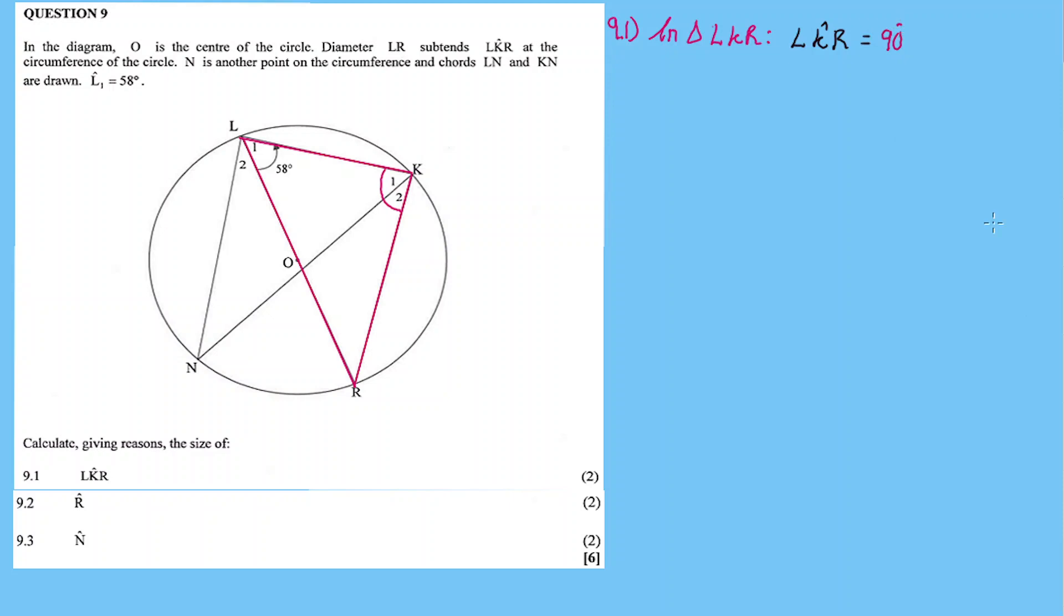This angle is 90 degrees because it's an angle in a semi-circle. Diameter LR subtends this angle. We use this theorem for calculating angle LKR.